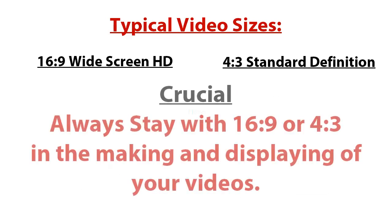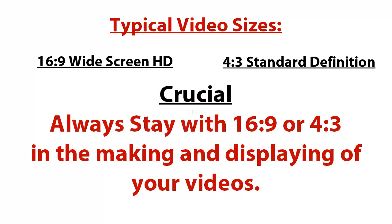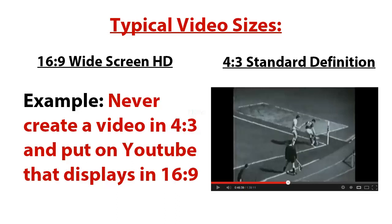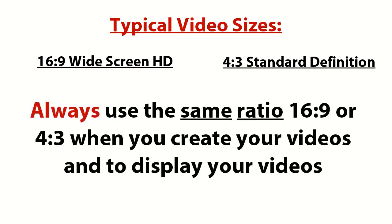Whatever you use — either widescreen or standard — you always must stay within the 16:9 or 4:3 ratio. For example, if you make a standard recording of 800 by 600 and you upload it to YouTube, YouTube uses 16:9 when playing on their website, so you're going to have black stripes on both sides of your screen. So you need to record on widescreen 16:9 if uploading to YouTube or Vimeo, or if using a widescreen self-hosted video player. Always use 16:9 or 4:3 and stay within the same ratios.